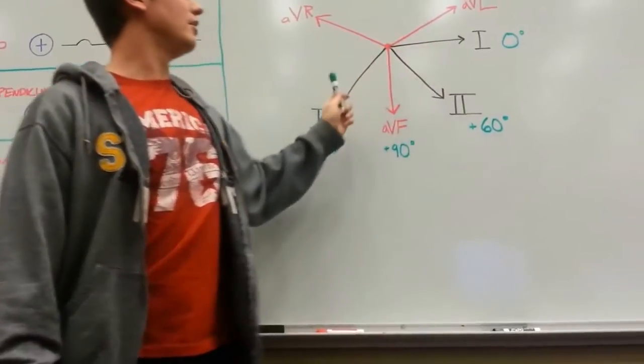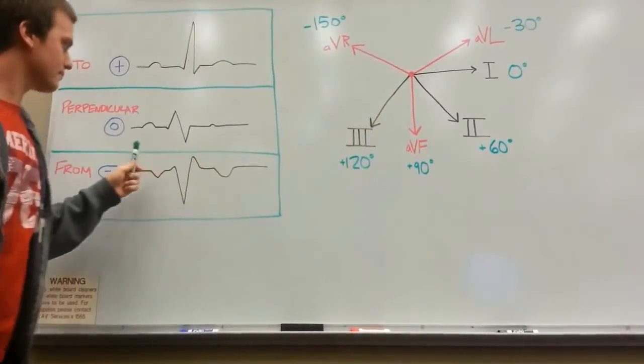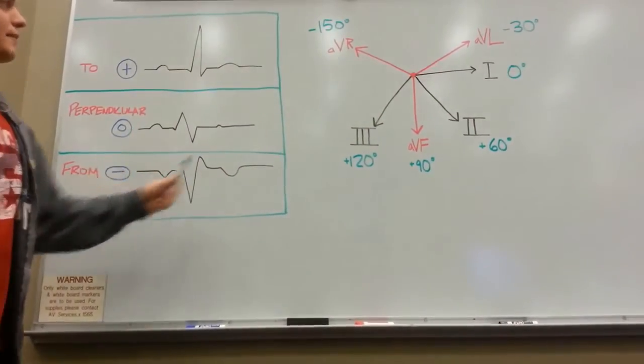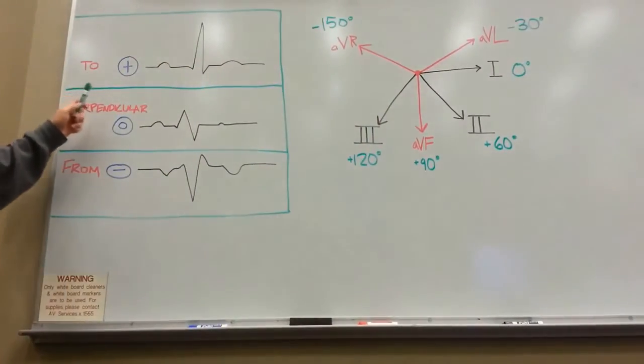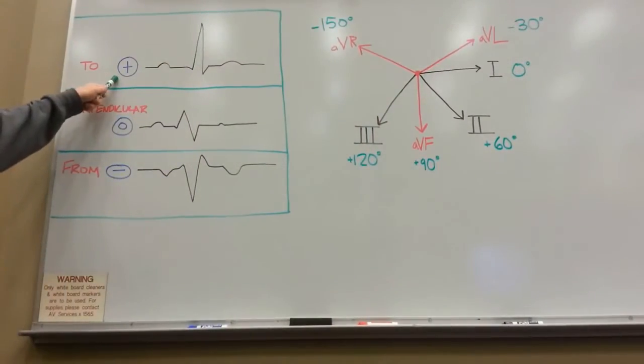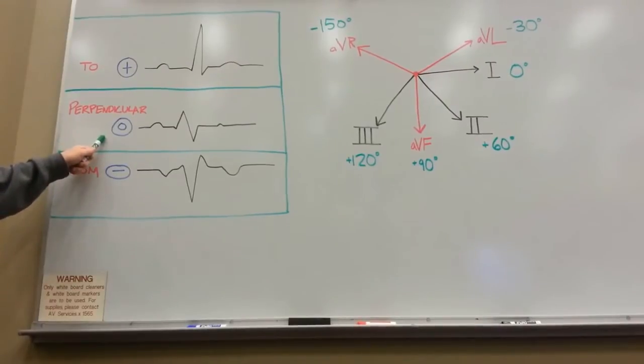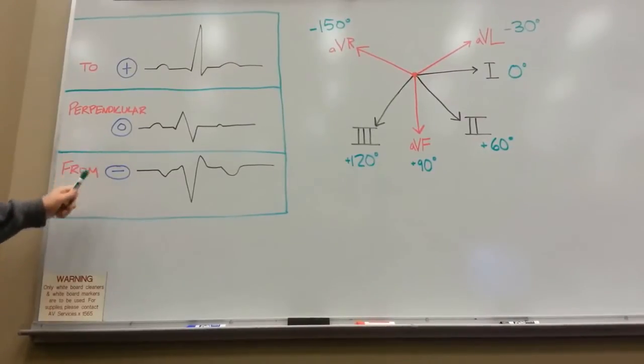Now that you have this diagram made, you want to take your ECG and look at the reading for each one of these six leads and classify it as either a positive deflection, biphasic or null deflection, or negative deflection.